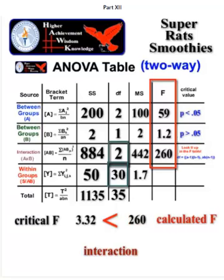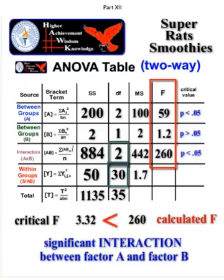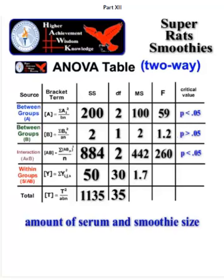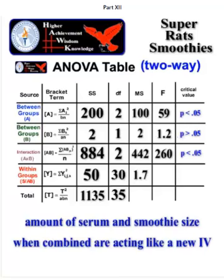And 260 is just giant, it's crazy. So therefore we know that there is a significant interaction going on between the A and B factors. Or in other words, somewhere between the amount of drug and the large and small smoothie is causing these guys to do more push-ups. It's like a new IV. The amount of serum and smoothie size when combined are acting like a brand new IV affecting the DV.